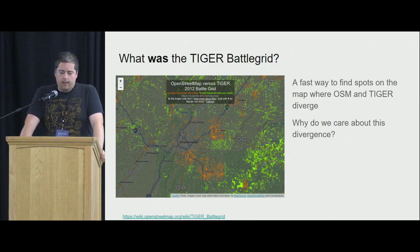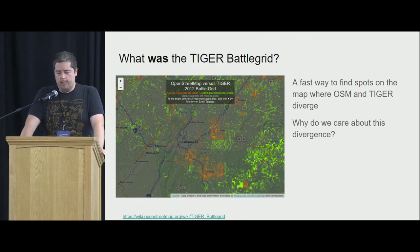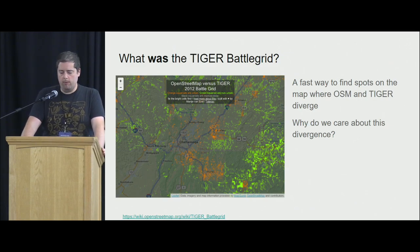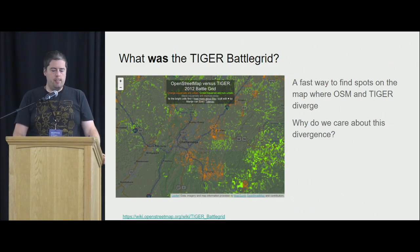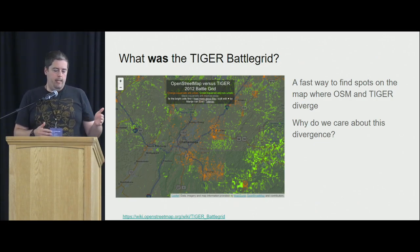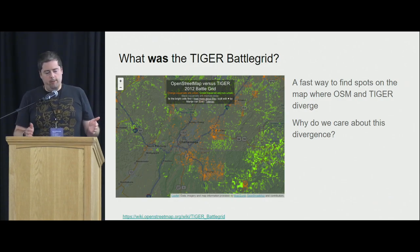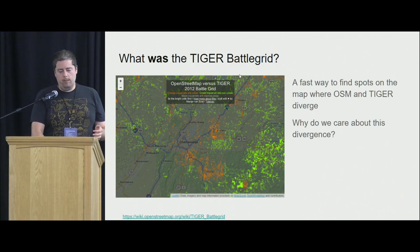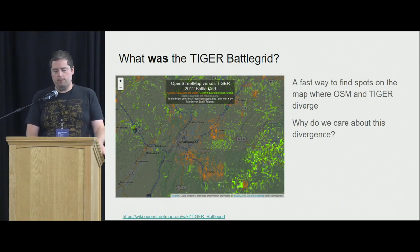That's important to know because the OSM data in the US came from Tiger in 2008 or so. As you can imagine, things change over time, and the vast majority of roads in OpenStreetMap hadn't been touched since that import. So this map was designed to show areas where there was a difference between what's in OpenStreetMap and what's in Tiger. This screenshot is from 2012.